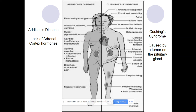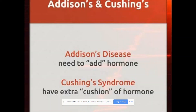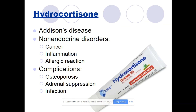The difference between Addison's disease and Cushing's syndrome: Addison's disease is a lack of adrenal cortex hormones — patients need to add hormones to their body to be normal — while Cushing's syndrome is caused by a tumor of the pituitary gland, giving an extra cushion of hormones that need to be removed. For Addison's disease, we give hydrocortisone, which can be given in several ways beyond just a topical cream. For non-endocrine disorders, it may be given for cancer, inflammation, or allergic reactions. Complications include osteoporosis, adrenal suppression, and infection.